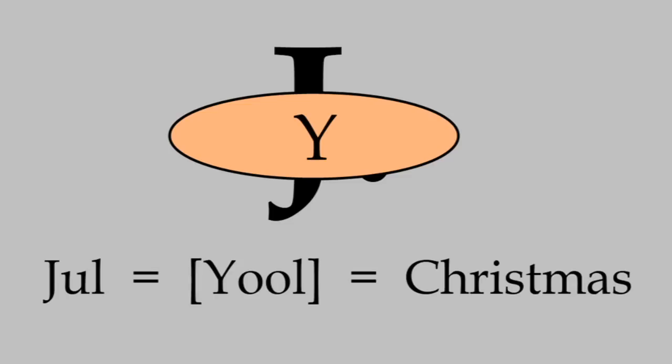Next up is J. This is pronounced like the English Y. As an example, jul means Christmas.